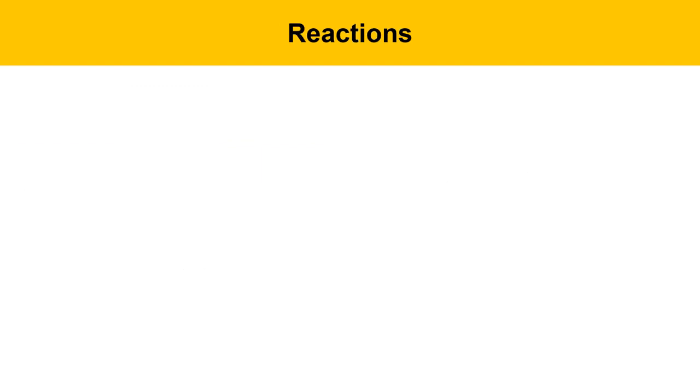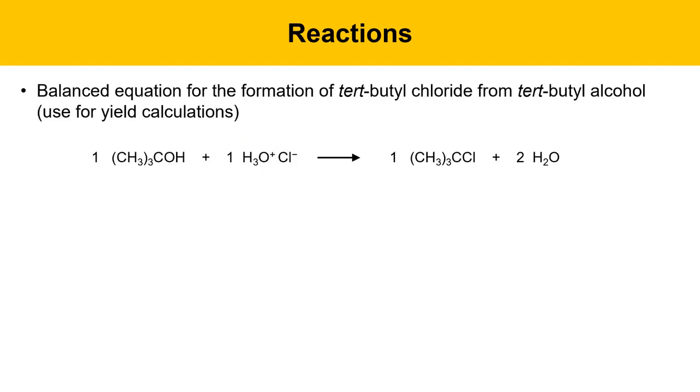Here's a summation of some reactions going on in this experiment. The balanced equation for the formation of tert-butyl chloride from tert-butyl alcohol is shown here. Use this equation for your yield calculations. One mole of tert-butyl alcohol reacts with one mole of concentrated hydrochloric acid to give one mole of tert-butyl chloride and two moles of water. One thing that's important to note is tert-butyl alcohol is somewhat water-soluble, so it dissolves pretty well in the aqueous HCl.